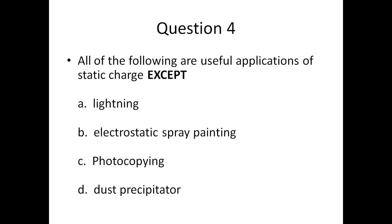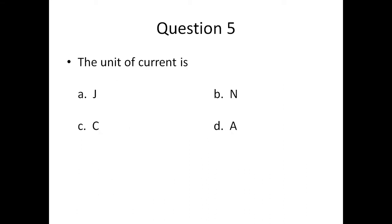Question four: all of the following are useful applications of static charge except — A) lightning, B) electrostatic spray painting, C) photocopying, or D) a dust precipitator. Question five: the unit of current is — A) joules, B) neutrons, C) coulombs, or D) amperes.